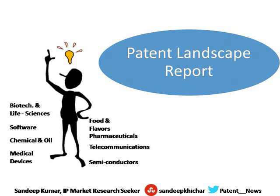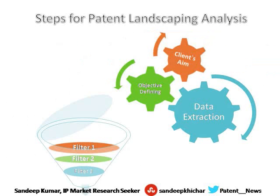The first step for the patent landscaping analysis is determination and interpretation of the client's aim or purpose. Further, IP professionals need to define the central objective, which is followed by the data extraction step. Then, whatever data we get, we have to pass these data or analysis report through various filters, which are shown here as filter 1, filter 2, and filter 3, respectively.